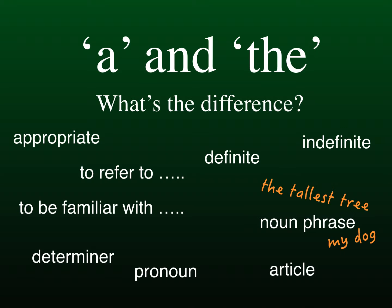Then we have 'determiner' — a set of words like 'this', 'some', or 'your', which come before a noun or a noun phrase. Determiners control the meaning of a noun. The 'my' in 'my dog' is a determiner. We also have 'pronoun' — it is used instead of a noun; examples are 'he' and 'them'. And finally, 'article' — 'a' or 'the'. These also come at the front of a noun phrase and they are the main topic of this lesson.